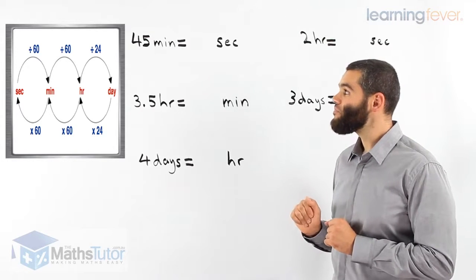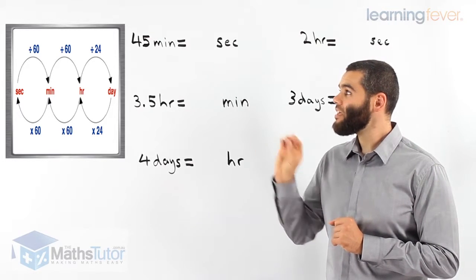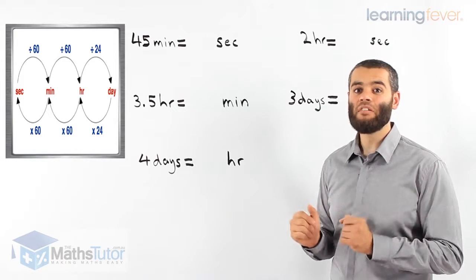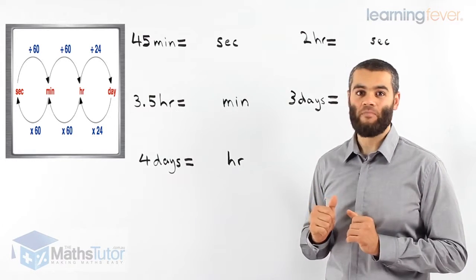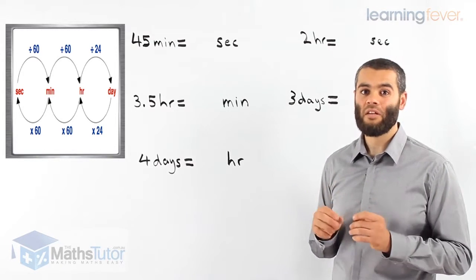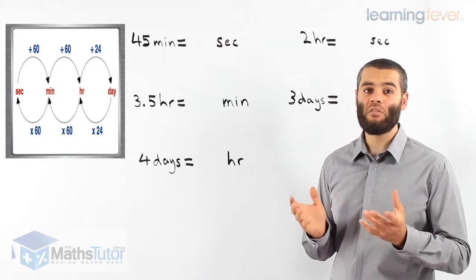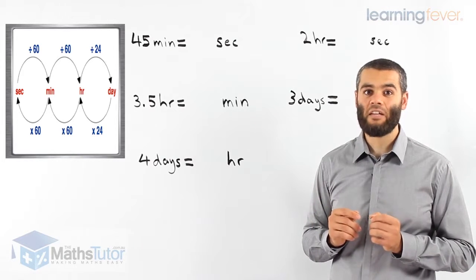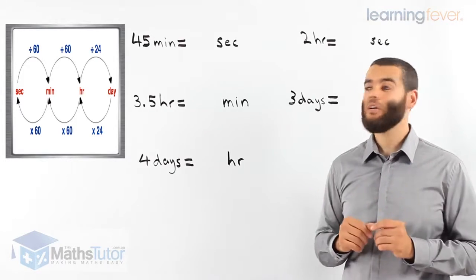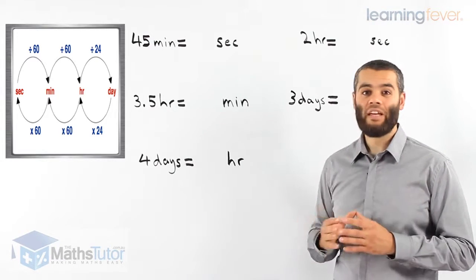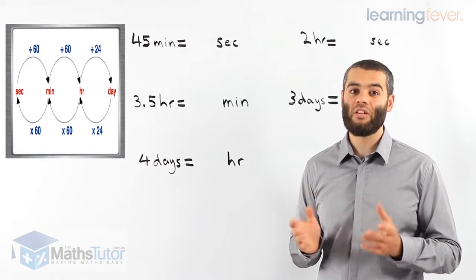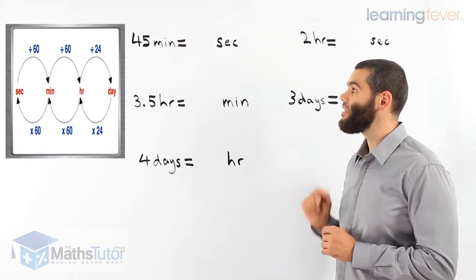We'll notice that we have seconds going to minutes. How do we go from seconds to minutes? We divide by 60. Why 60? Because there are 60 seconds in a minute. And if you want to go from minutes to hours, we divide by 60 again — because there are 60 minutes in an hour. And if we're going from hours to days, we divide by 24, because there are 24 hours in a day.